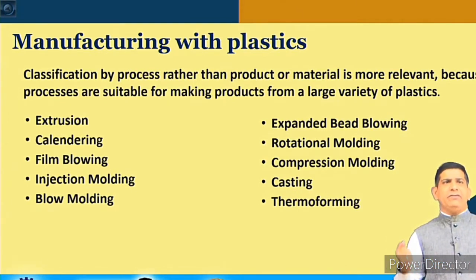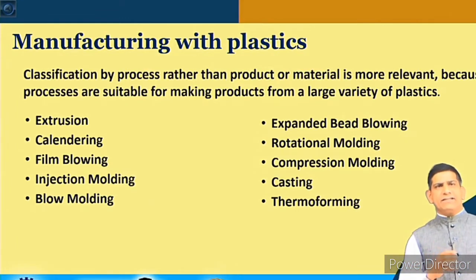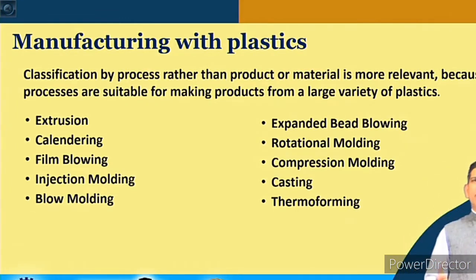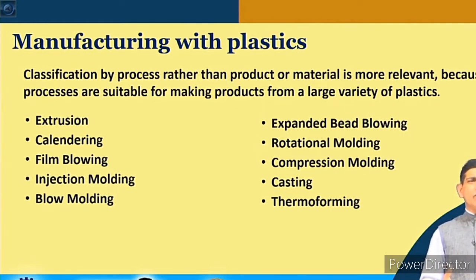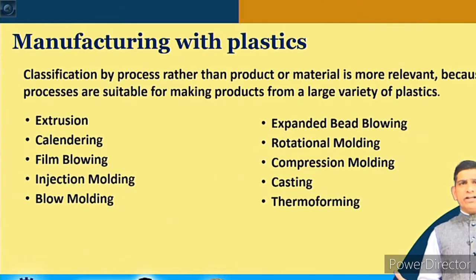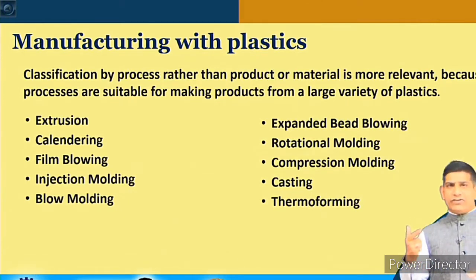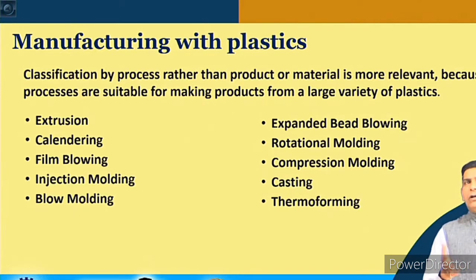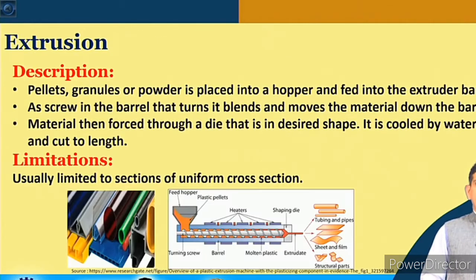These are the different ways we make plastic products, and based on the manufacturing method, products can be classified into different types — expanded bead, rotational molding, compression molding, casting, thermoforming. Many of these methods are also used for other types of manufacturing, whether based on glass or metals. Many things are common, but of course there are certain things done specifically for plastic.